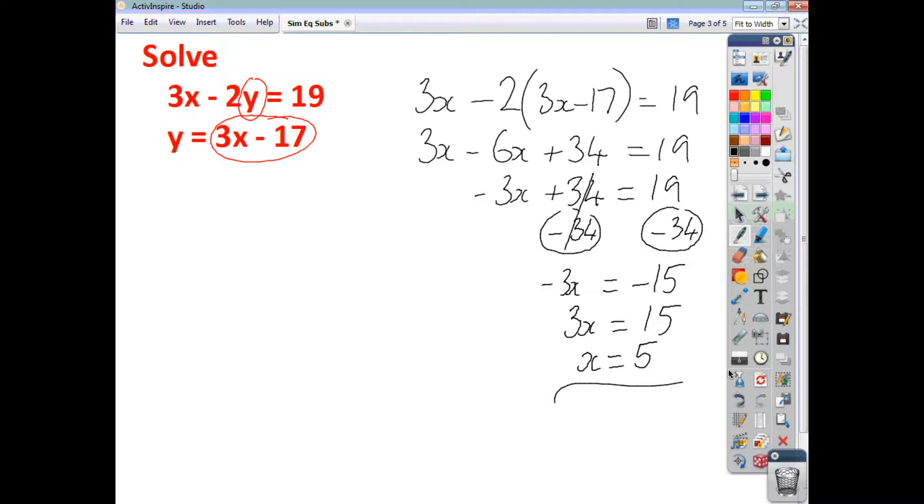And that's not me finished, because I have to also state what y is equal to. So the easiest equation to use is obviously the one that's already got y as its subject. So we say y equals not 3x, but 3 times 5, because I know that x is 5. And then we take away our 17. So we end up with 15 minus 17, which gives me a value for y of negative 2.